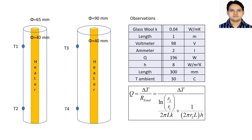By changing the radius across different cylinders, our intention is to calculate heat transfer for different radii and plot a graph. The insulating material selected in our experimental setup is glass wool and its conductivity is 0.04 watt per meter Kelvin. The length of this cylinder is 300 mm. The voltmeter is set at 98 volts, so Q equals V into I — the input to the system is 196 watts.